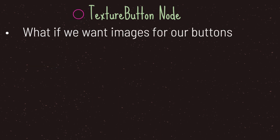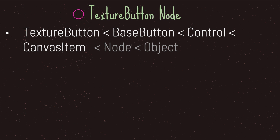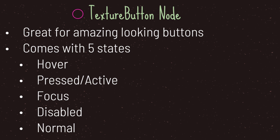If you want to use images for your buttons, Godot offers the texture button node. Texture button is a child of the base button, so we get all the functionality including the virtual pressed method, and we also inherit from node for the basic script life cycles. Texture buttons are great when you want amazing looking buttons — for example when you hire an artist to create custom button art. The texture button node gives us five different states: hover, pressed, focus, disabled, and normal — the same five states as the button node, but instead of a style box, each state takes in a texture.